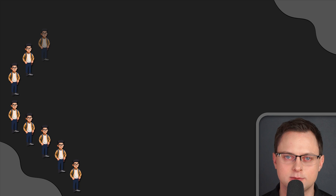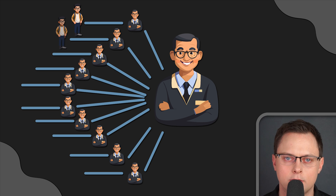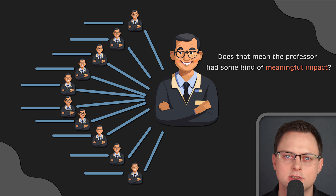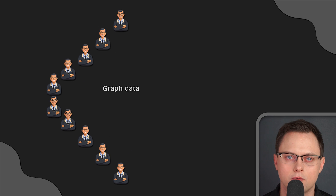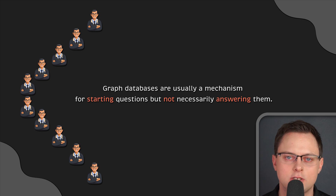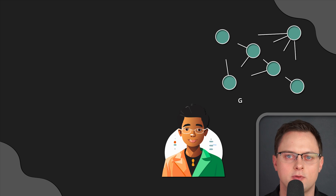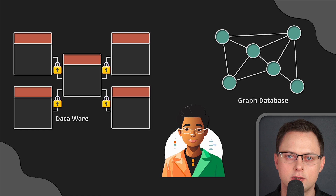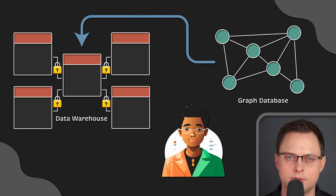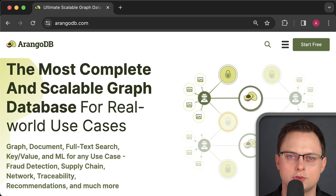You need to be very careful with graph databases because they can infer connections that don't actually mean anything. For example, imagine the inference you could make if all the students in our previous example ended up dropping out of school — does that mean the original professor had some kind of meaningful impact on that bad outcome? Graph databases are usually a mechanism for starting questions but not necessarily answering them. The data science community uses graph databases to test inferences, and the discovery of these relationships often gets bubbled up into data warehouses. One open-source graph database I can suggest is ArangoDB.